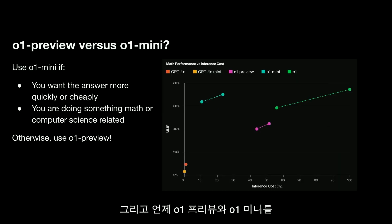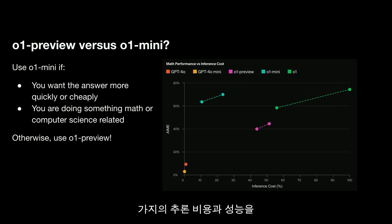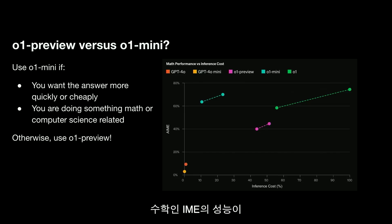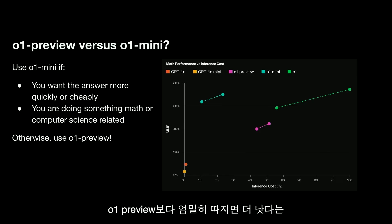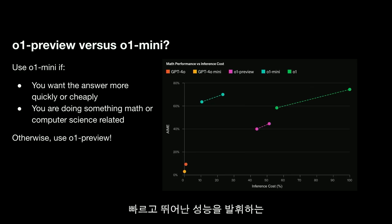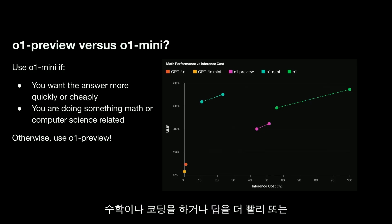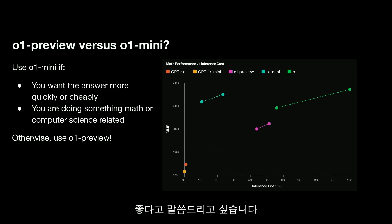There's also the question of when to use O1 preview versus O1 mini. This plot shows inference cost versus performance: inference cost on the x-axis and performance on IMO on the y-axis. Interestingly, O1 mini is actually strictly better than O1 preview, because we really specialized O1 mini to be a fast but performant model on math and coding. You should use O1 mini if you're doing math or coding or want the answer more quickly or cheaply. In other cases, O1 preview is a good choice.